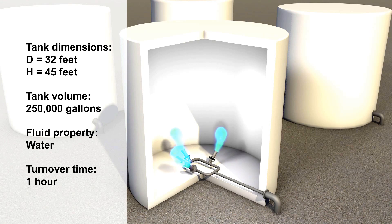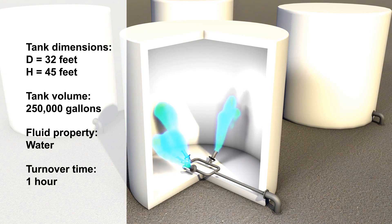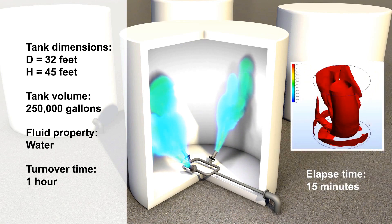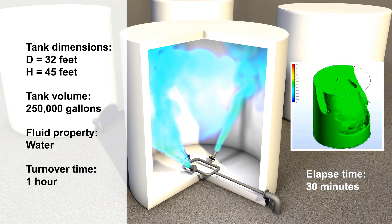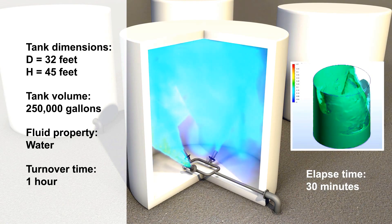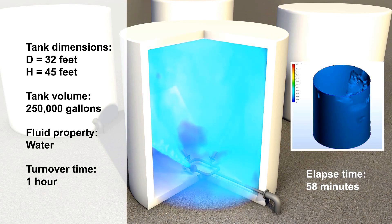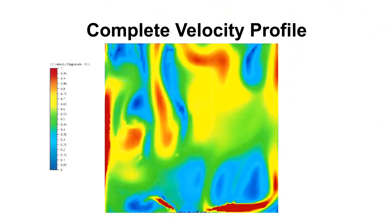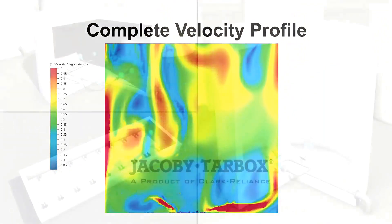The finished CFD analysis shows the average velocity flow growing in the tank. These are the results after 15 minutes, 30 minutes, 45 minutes, and finally at full blend, 58 minutes. We will then show the complete full blend.